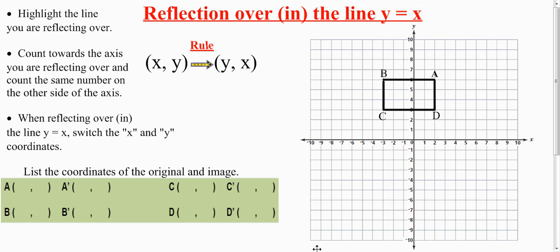By far the most difficult reflection is over the line y equals x, but it's really not difficult at all. It's just that people forget where the line is and forget the rule. So I'm going to first not use the rule and just reflect over the line itself — the whole thing is knowing where the line is.